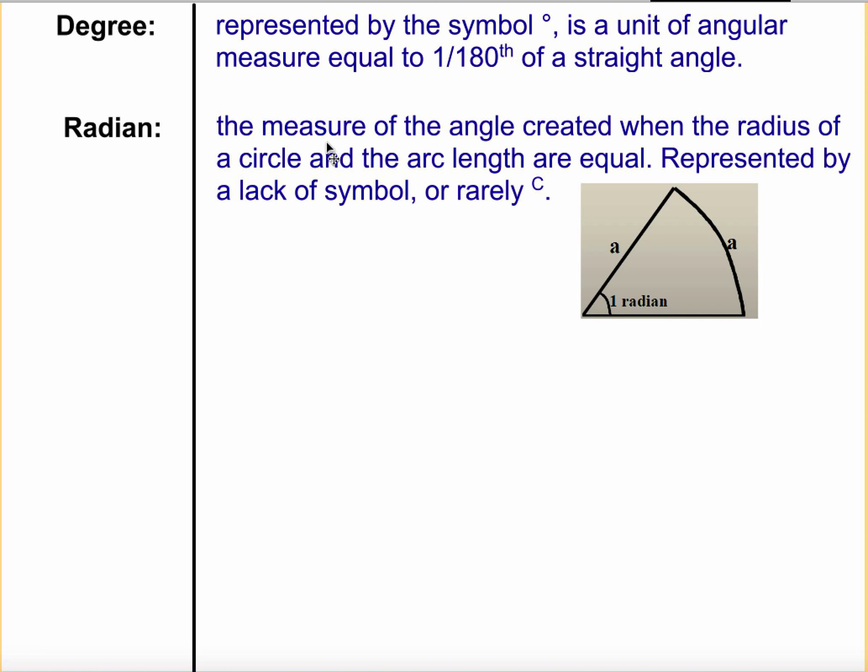Next we've got the definition for degree. A degree is represented by the symbol, this little degree symbol here. You guys are probably pretty familiar with it. And it's a unit of angular measure that's equal to 1/180th of a straight angle. A straight angle is just a straight line. Now radian, we already talked about it a little bit, it's the measure of the angle that's created when the radius of the circle and its arc length are also of equal measurement. Now, usually we see radian represented by a lack of a symbol and sometimes very rarely we'll see it in the superscript position, which is kind of like where we see our exponents with a capital C. I'm sure you can tell why we don't use that very often, right? Because it would look almost like it's a degree symbol if we're not really careful.